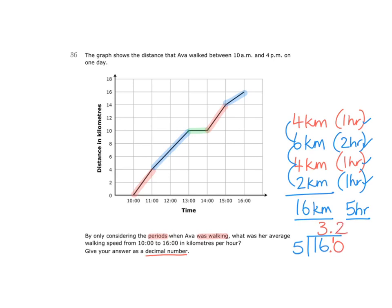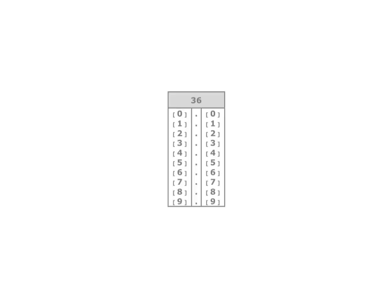And that means that Ava's average speed from 10am to 4pm in kilometres per hour is 3.2km per hour. And you can show the answer of 3.2 on the answer paper like this.